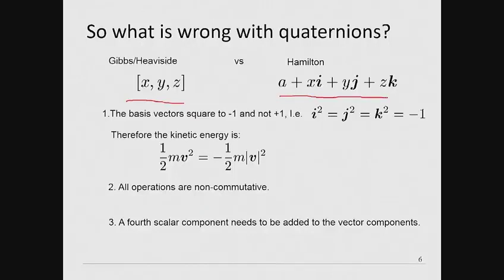Heaviside stated regarding his rejection of the Quaternionic vectors of Hamilton: I came later to see that as far as the vector analysis I required was concerned, the Quaternion was not only not required, but was a positive evil of no inconsiderable magnitude, and that by its avoidance, the establishment of vector analysis was made quite simple and its working also simplified, and that it could be conveniently harmonised with ordinary Cartesian work.